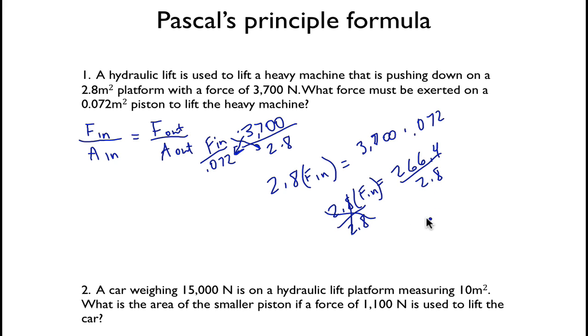And so this cancels out. We're just left with F in on that side, our input force. So we have F in equals 95.14 Newtons on that side. So that's our final answer. So pretty simple. That's how we're going to use Pascal's principle formula.